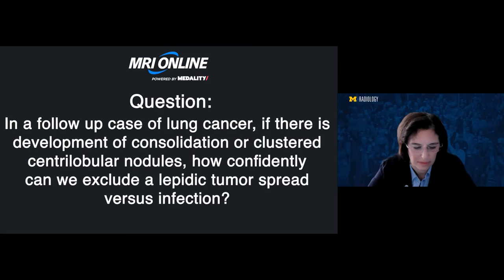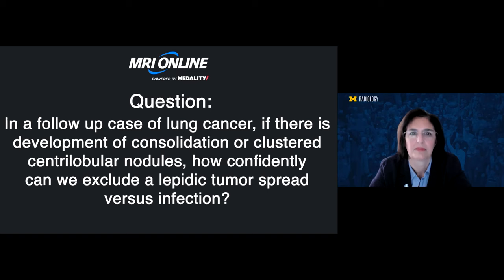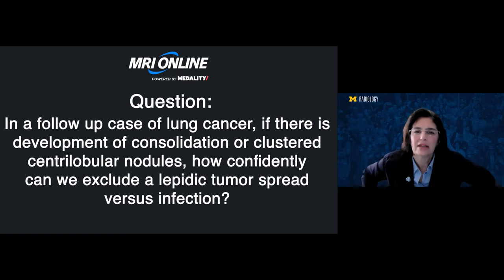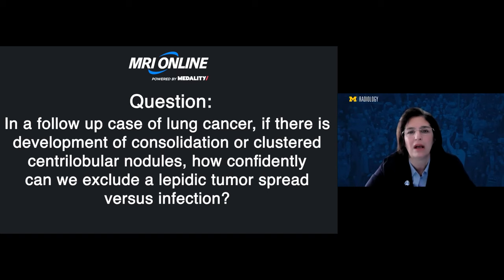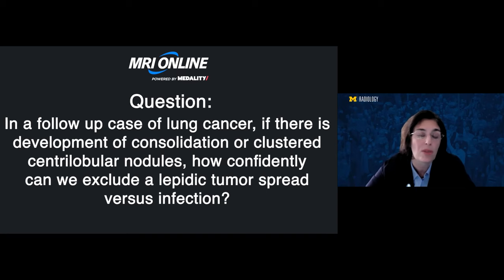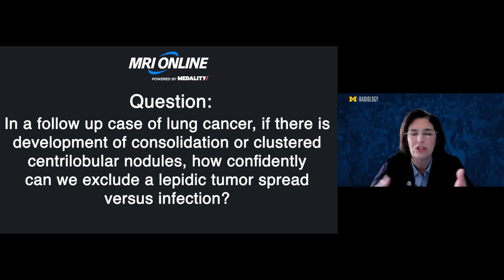In a follow-up case of lung cancer, say post-chemo, is there a development of consolidation or clustered central lobule nodules? And how confidently can we exclude a lipidic tumor spread versus infection? Lung cancer post-treatment CTs can be very challenging to interpret, whether it's findings related to chemotherapy or immunotherapy, which can mimic lung cancer, or post-SBRT findings. When there is uncertainty, it's very important that you describe the findings and mention both possibilities.